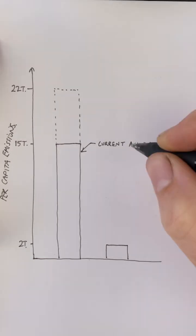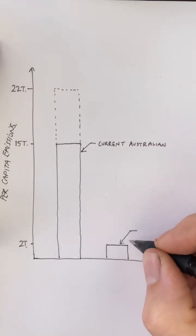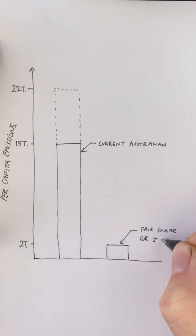The current individual Australian emissions are about 15 tonnes. For a population of 10 billion people, the fair budget would be 2 tonnes per person.